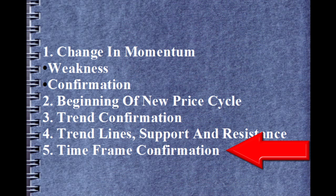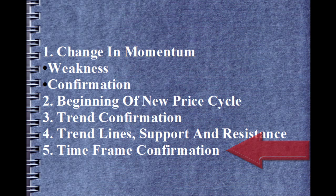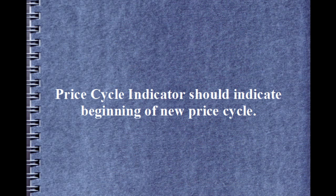If you know western, Japanese, or price-volume patterns, they can provide additional strength to your analysis. First, price should show a change in momentum — it should change by first showing weakness, then by confirming the momentum. Instant change in momentum has most of the time been found to fail miserably to generate any profitable move, hence weakness before confirmation is required. Then you need a price cycle indicator showing the beginning of a new price cycle. Third, you need a trend confirmation indicator — you buy only when you are sure the trend is in your favor. Understanding trend lines, support, and resistance is needed to make assumptions about stop loss and targets.